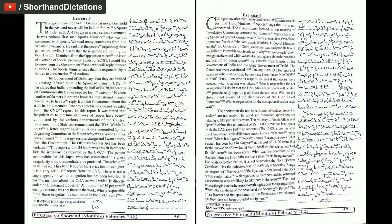The Ministry of Youth Affairs and Sports claims that an amount of Rs. 11,000 crore has been spent while the CAG says that an amount of Rs. 13,000 crore has been spent. So, where is this difference amount of Rs. 2,000 crore being spent? Where has it gone?